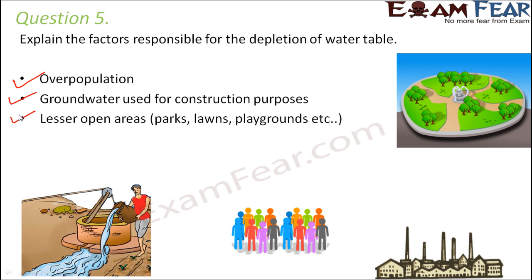Increasing industries and factories also deplete the water table. These factories and industries utilize a lot of water, cause pollution to water bodies, and occupy space that was earlier used for recharging groundwater. When that space was empty, rainfall could reach below the ground to refill groundwater, but construction of industries prevents this.